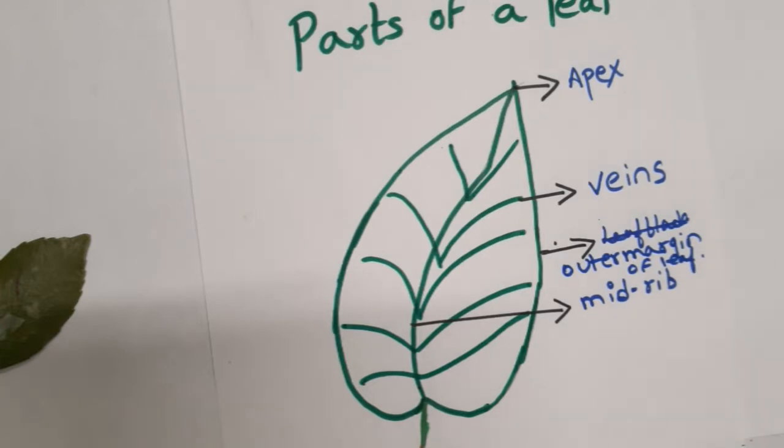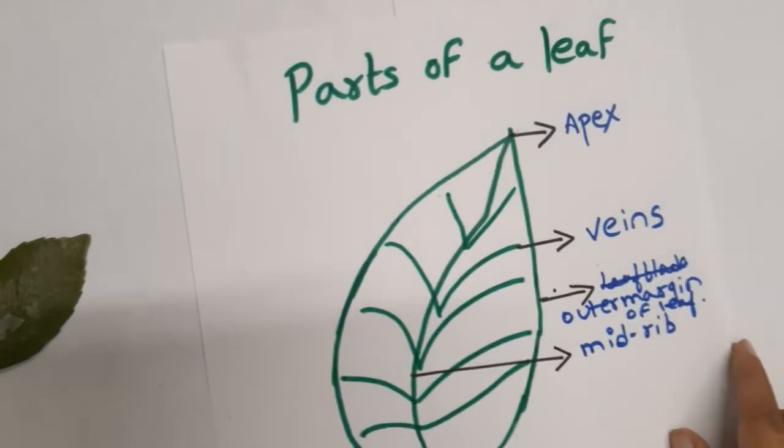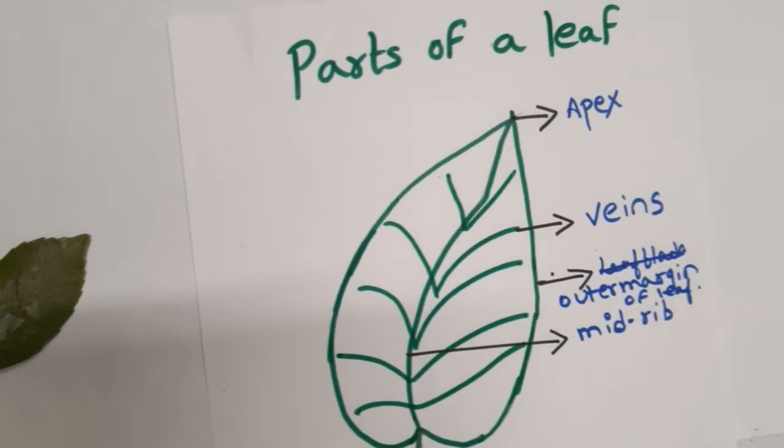Parts of the leaf and the different types of leaves are important topics. Parts of the leaf is very important for kindergarteners and grade 1 kids to learn. What are the parts of the leaf?